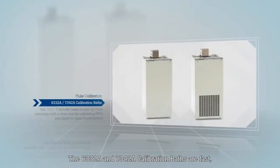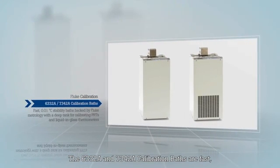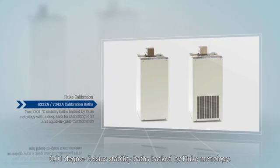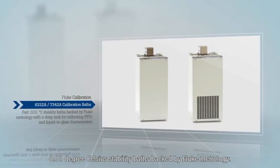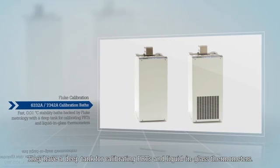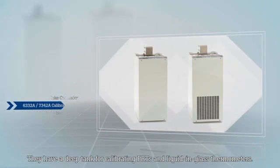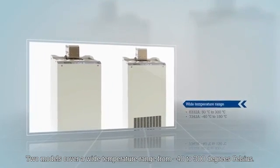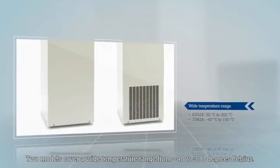The 6332 and 7342 calibration baths are fast 0.01 degree Celsius stability baths backed by Fluke Metrology. They have a deep tank for calibrating PRTs and liquid-in-glass thermometers. Two models cover a wide temperature range from minus 40 to 300 degrees Celsius.